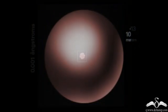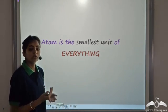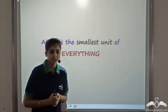So the final stage that we can reach is the atoms. So atom is the smallest unit of everything that you see around you.